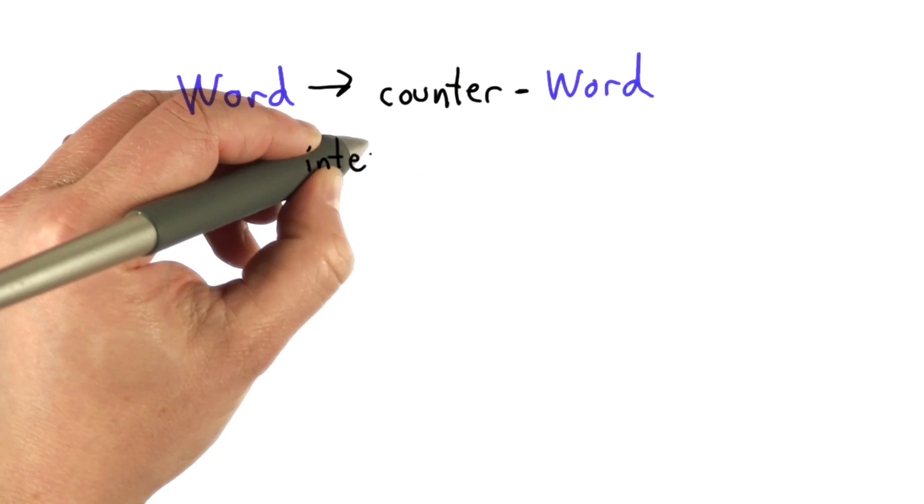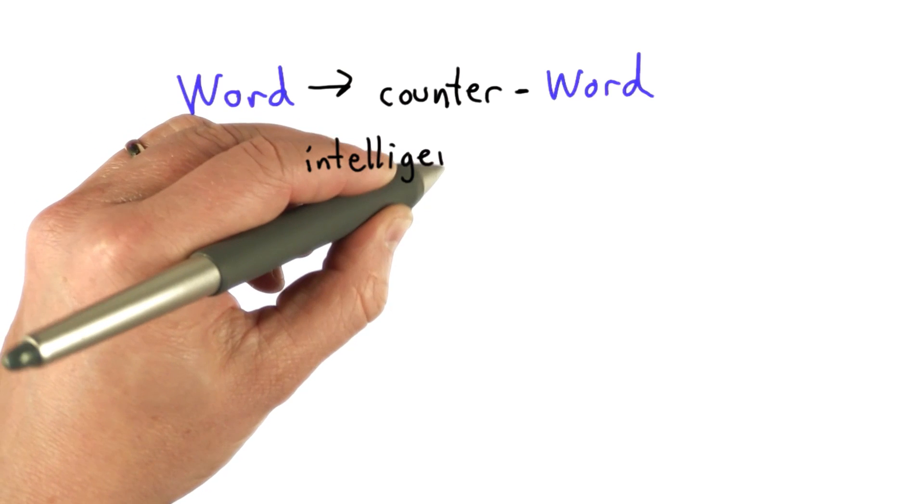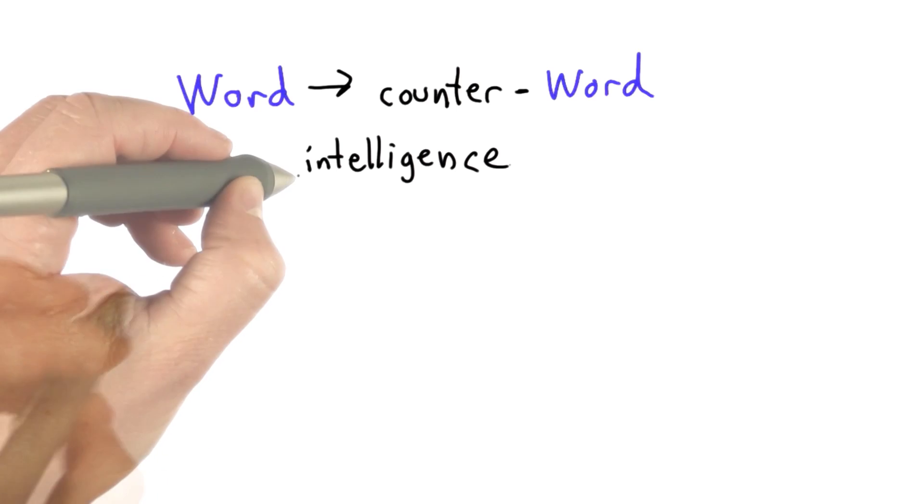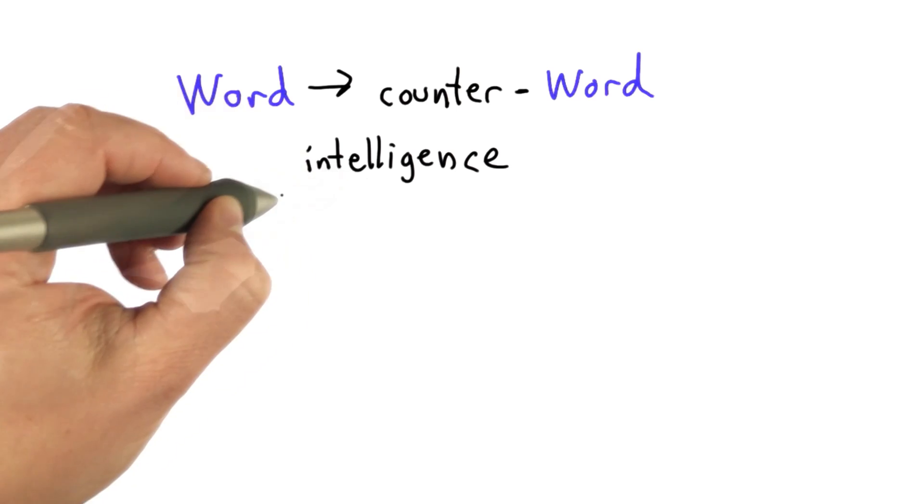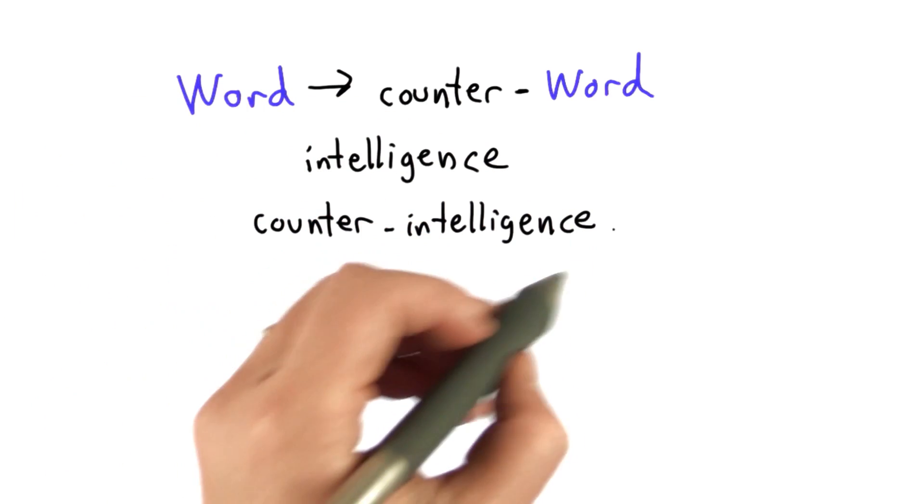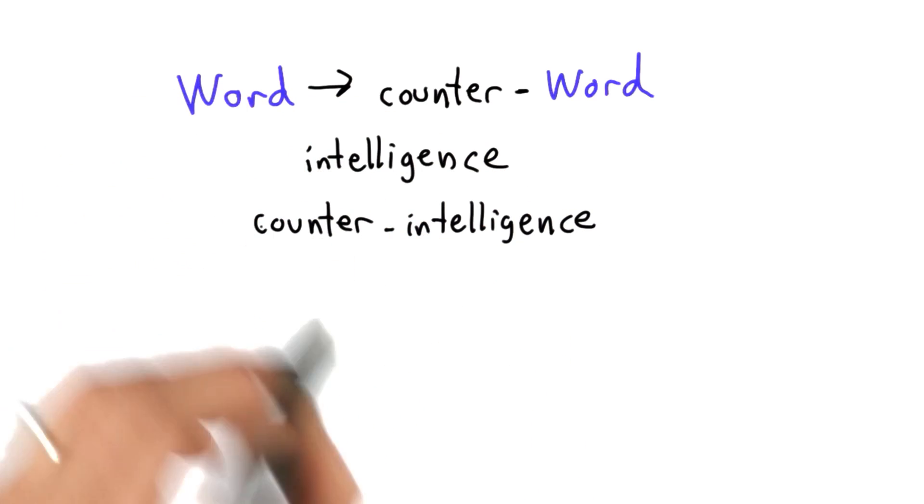So if we started with the word intelligence—and I mean this in the sense of spycraft, not in terms of smarts—well then, we can use the rule. We could make the word counterintelligence. Intelligence was a word. We added counter in front of it to make counterintelligence, and that means trying to thwart intelligence from the enemy.